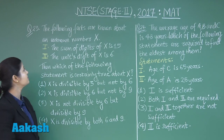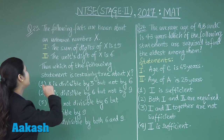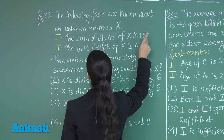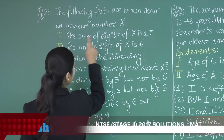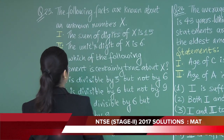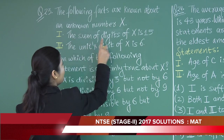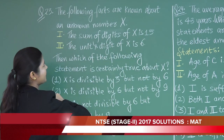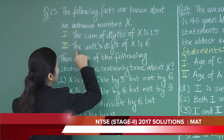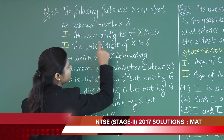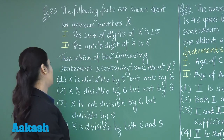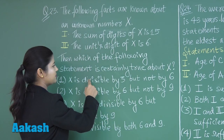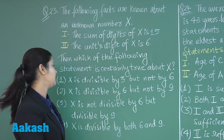Let us discuss question number 23. It states that the following facts are known about an unknown number x. The first statement says the sum of the digits of x is 15. According to the second statement, the units digit of x is 6. Then which of the following statements is certainly true about x?